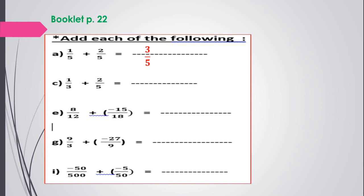Second: 1 over 3 plus 2 over 5 — we don't have the same denominators, so we must make them equal. Multiply the first number up and down by 5, and the second number up and down by 3. It becomes 5 over 15 plus 6 over 15. Same denominators, then add: the answer is 11 over 15, and this is in simplest form.